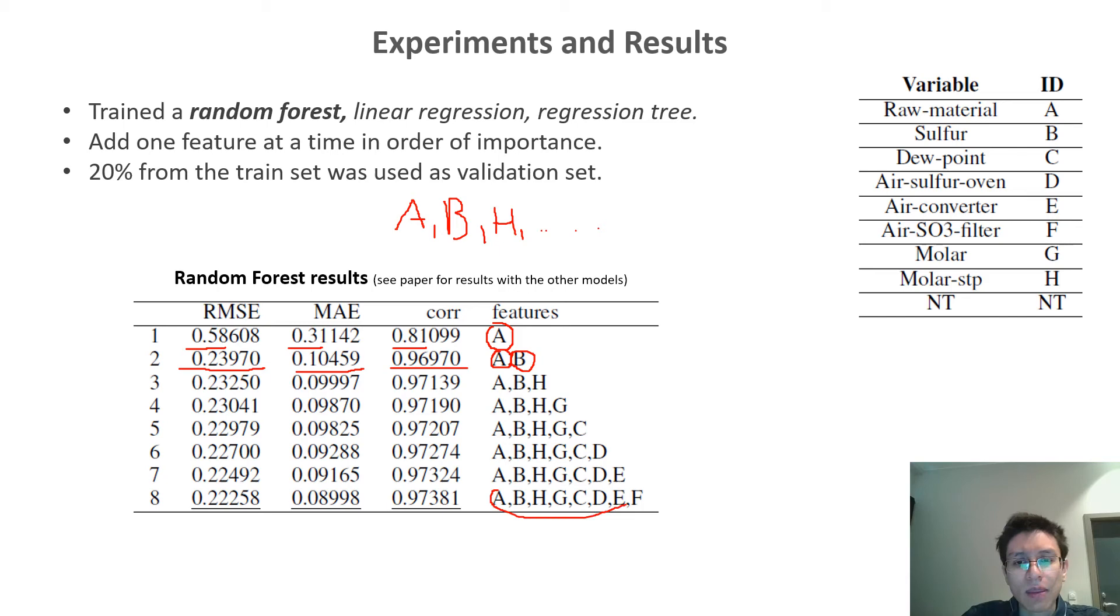We kept doing this until we included all eight variables. And the best results were achieved when using all the eight input variables. But one thing we can note here is that the performance when using all the variables, and when using only the top three most important variables, for example, is not that different. So here we can see that even though we are only using three variables, we are still getting pretty good results compared to when using all variables.